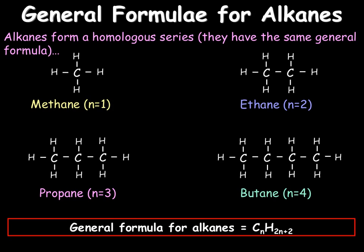Here we have the structural formulas for the first four alkanes: methane with one carbon, ethane with two, propane with three, and finally butane with four. So using our general formula, for example for methane, we have Cn where n is 1, and then H2n+2, so we do 2 times 1 plus 2, giving us 4. So methane is C1H4.